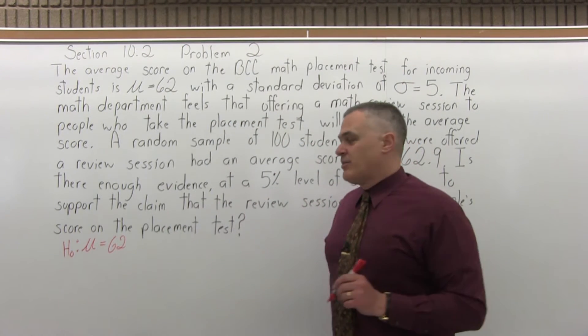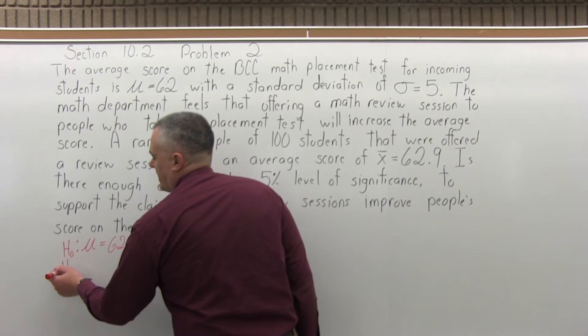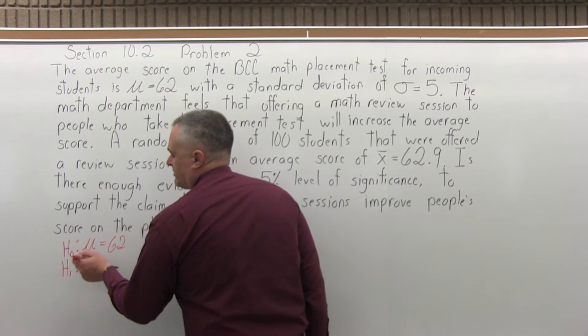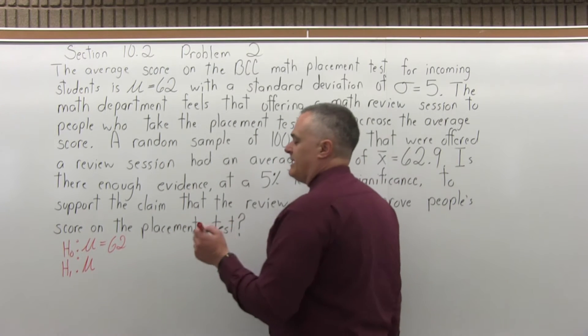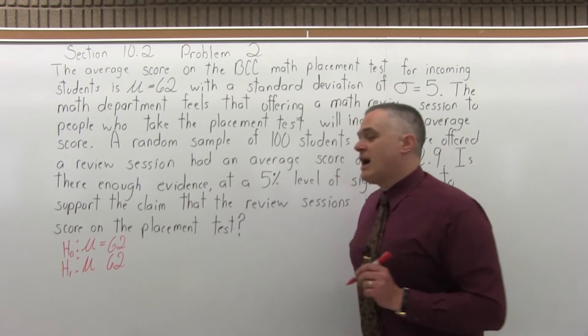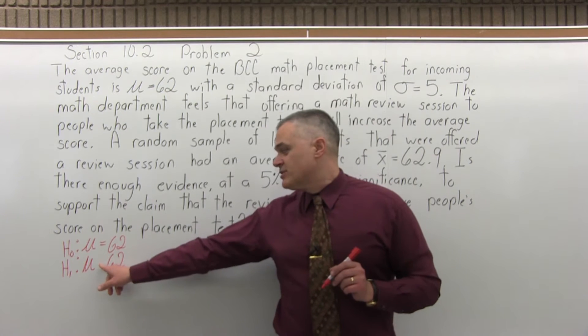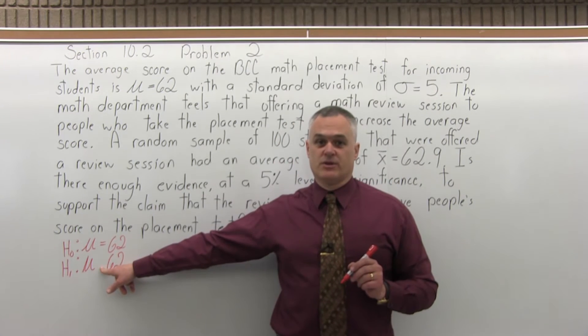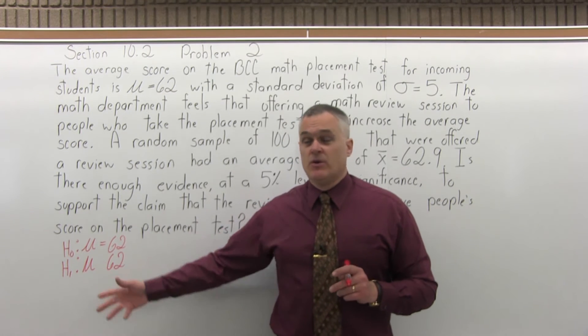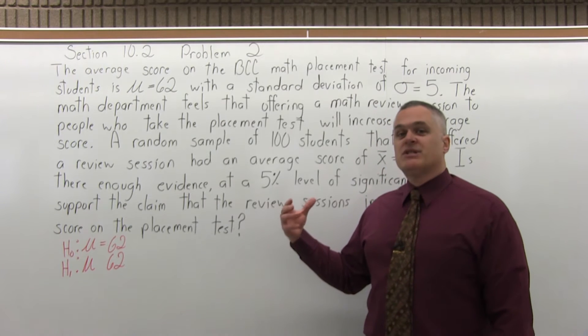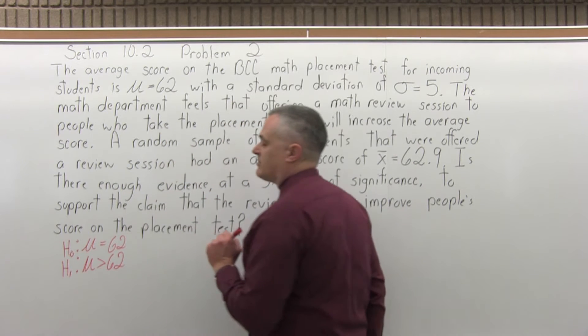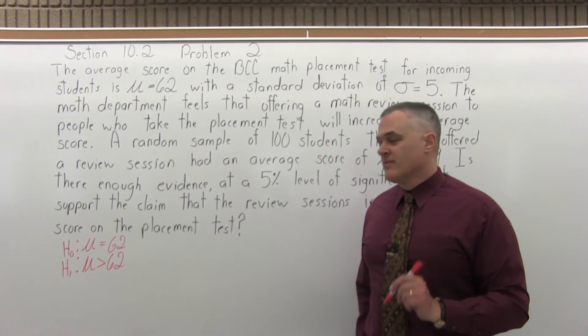Step two, state the alternate hypothesis. The alternate hypothesis has a symbol of capital H with a subscript of 1. There's going to be a mu again for the symbol for population average or mean. The same number, this is 62. For the alternate, you're going to have 62 again. Now, between the mu and the 62, you'll have some form of inequality symbol or not equal to. So your three options are greater than, less than, or not equal to. Well, in this case, what are we testing? We're testing the claim that the average has increased. That the average is now greater than 62 because of these review sessions. So I'm going to use a greater than symbol. That was step two.